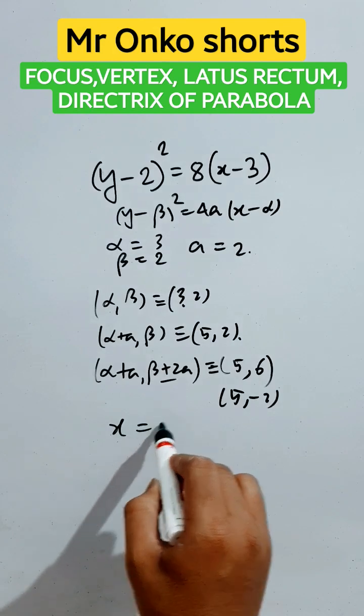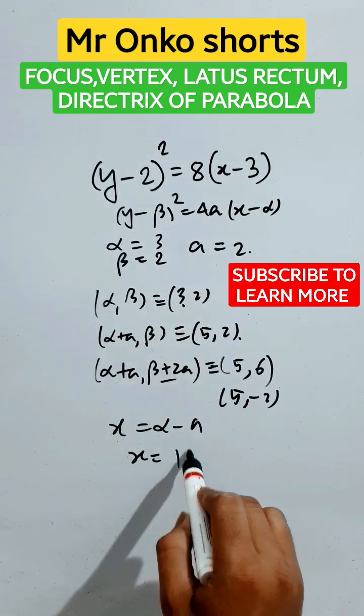And the directrix will be x equals α minus a, that is x equals 3 minus 2, that is 1. This is the directrix.